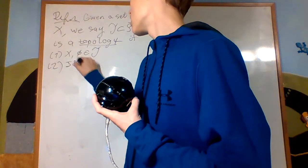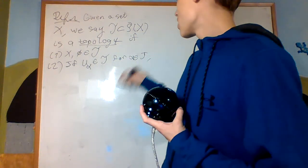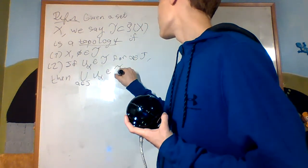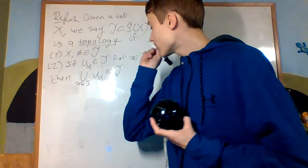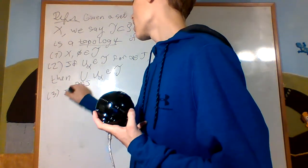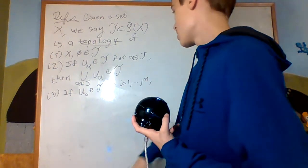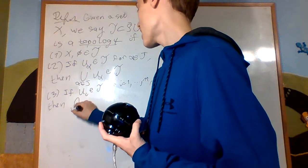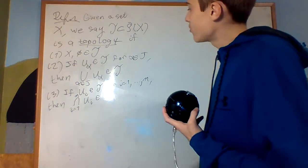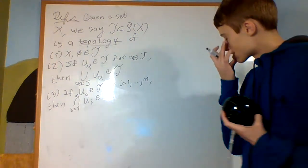Number two is that if U_alpha is an element of T for alpha in J, then the union of all the alpha in J of U_alpha is in T as well. You may have noticed this came up in measure theory with open sets. Number three, if U_i is an element of T for i equals 1 to n, then the intersection from i equals 1 to n of U_i is an element of the topology as well.